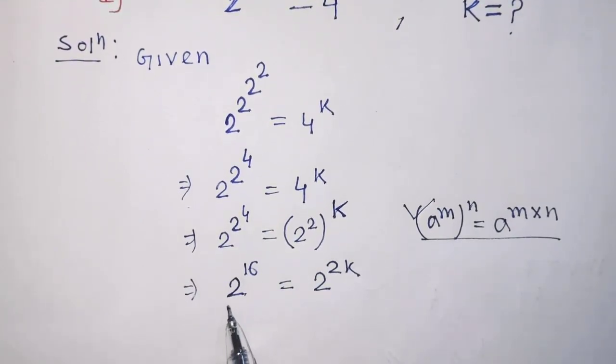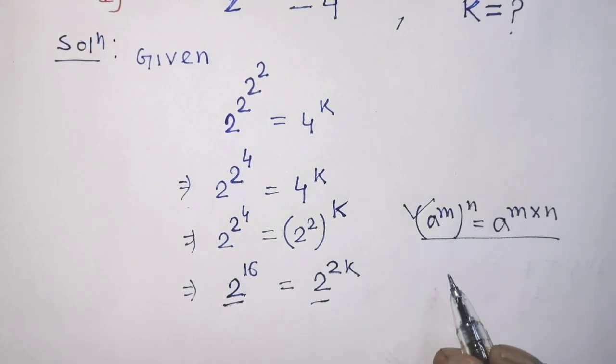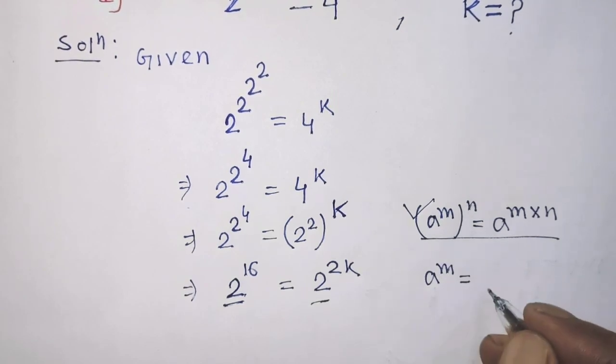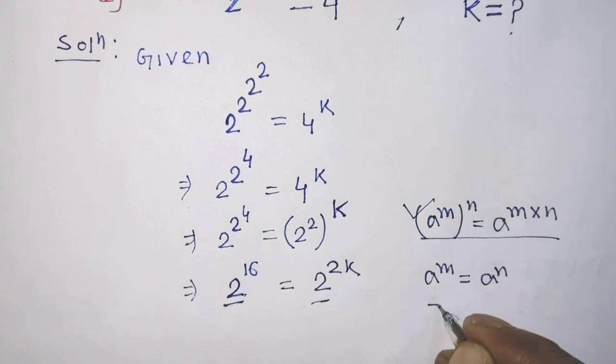In this equation, on both sides in the place of base, both are same. So now, we have to apply the formula, a to the power m is equal to a to the power n implies that m is equal to n.